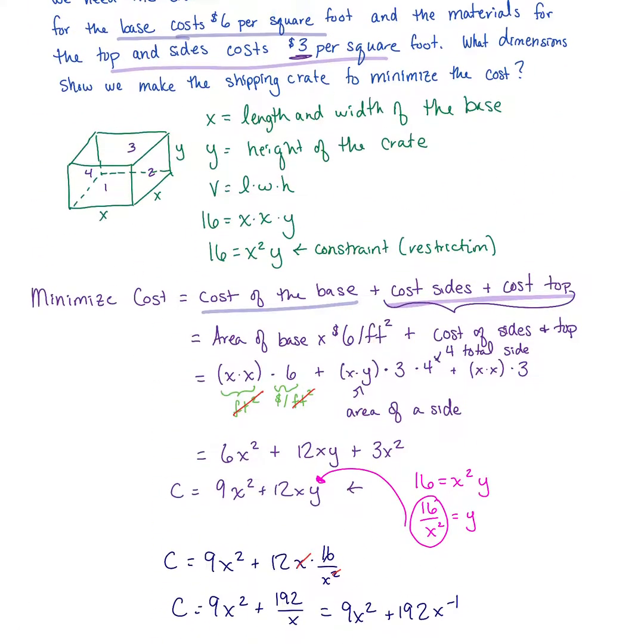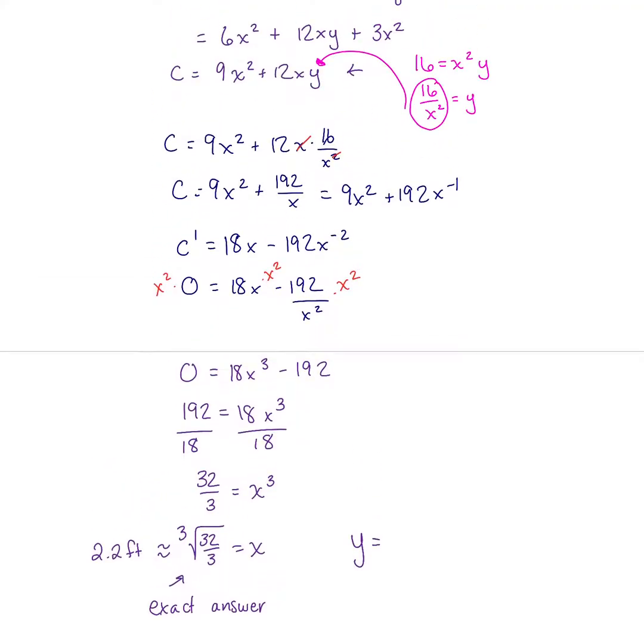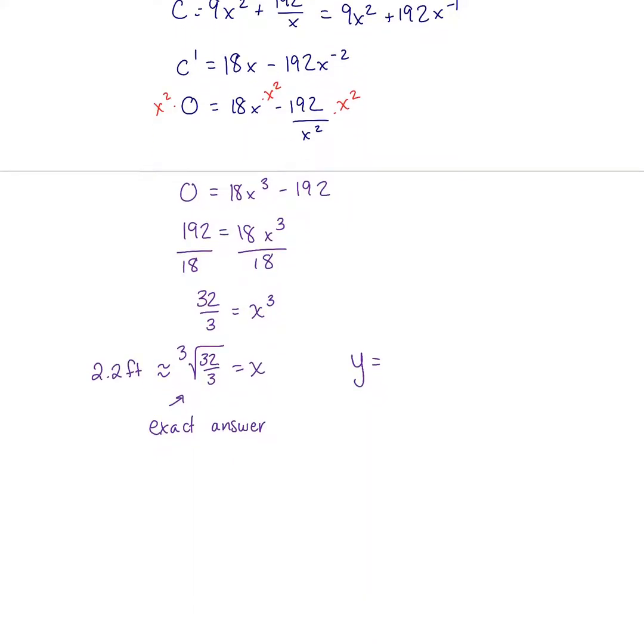X is our length and width of our base. We do need to find the height of our crate because we want to find our dimensions, so we need x and y. I also want the approximation for this just so I know what this means in terms of feet. It's about 2.2 feet. The y value we can get from our equation in pink because y equals 16 divided by x squared. For this one, our exact answer would be taking that x value and putting it into that equation, 16 over x squared.